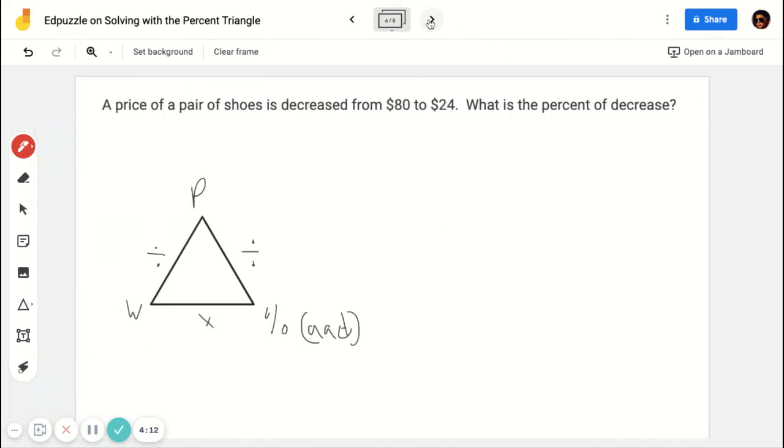Let's look at another one. It says a pair of shoes is decreased from $80 to $24. What is the percent of decrease? So again, I have to figure out, well, they're giving me the part and they're giving me the whole. But which one is which? Well, this is where I started. That's the old. So $80 is going to go here. And the part is the $24.